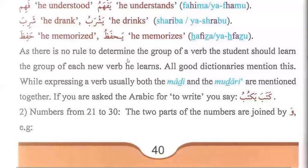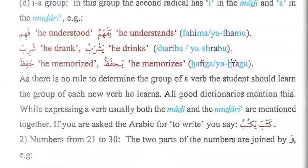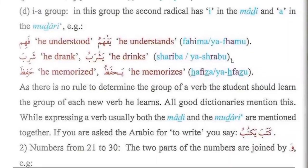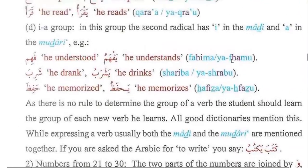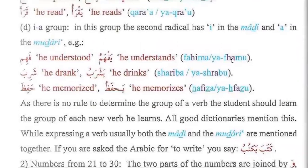As there is no rule to determine the group of a verb, the student should learn the group of each new verb. Both the madi and the muzari are given together. If you want to say the Arabic for 'to write,' you say kataba, yaktubu. Basically there is no rule for converting madi into muzari. Some groups have been made, but still you will need to memorize all the verbs from madi to muzari together.